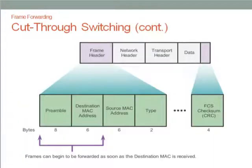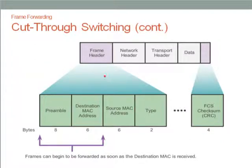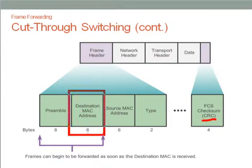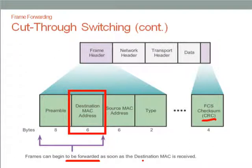This is the data format for cut-through switching. It is similar to the store and forward method, with a frame header, data, and an FCS checksum. For cut-through switching, it does not wait for the rest of the information to be available — as long as the destination MAC address is available, it will begin to forward the frame to the destination.